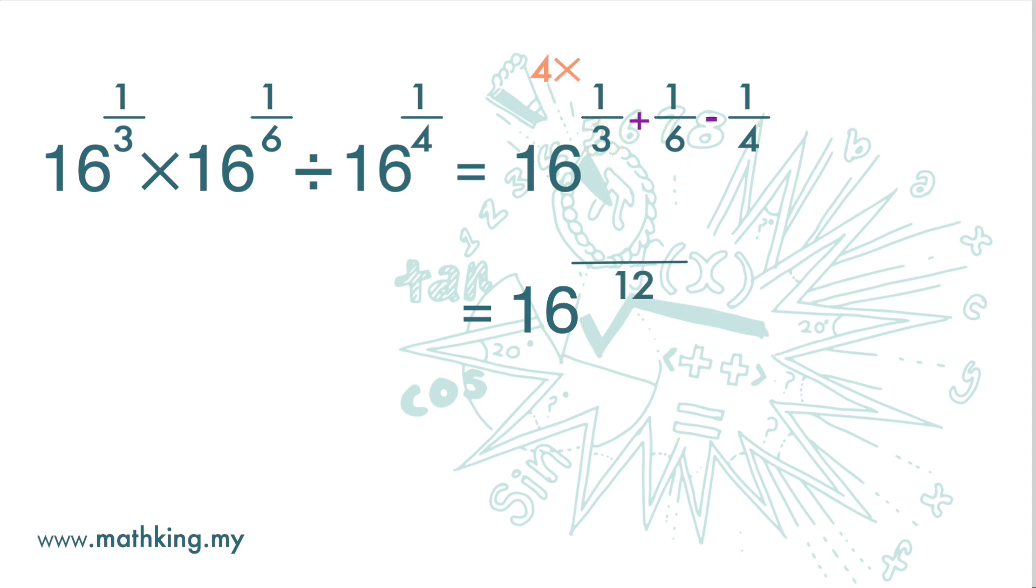3 times 4 is 12, so 1 times 4 is 4. 6 times 2 is 12, so 1 times 2 is 2. 4 times 3 is 12, so 1 times 3 is 3.